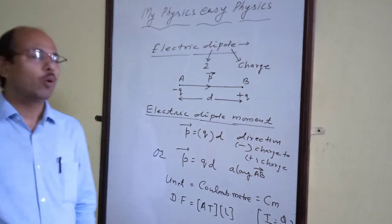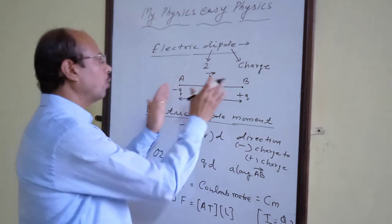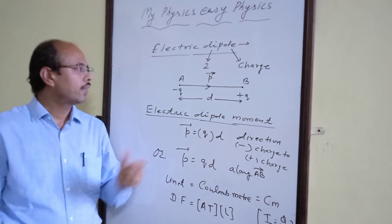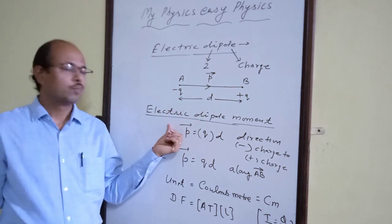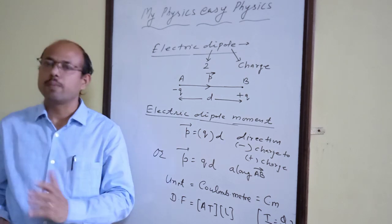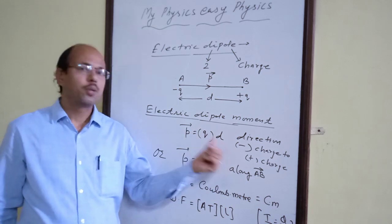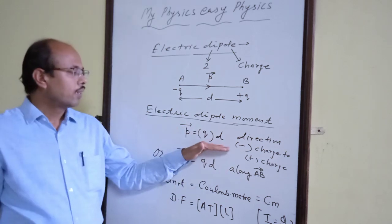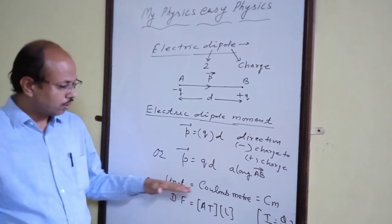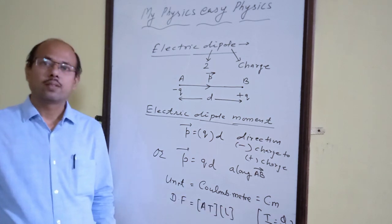So this is what about electric dipole and electric dipole moment. To recap: an electric dipole is a system of two equal and opposite charges placed at a small distance apart. Electric dipole moment is a measurable quantity given by the product of the magnitude of either charge and the distance between them. The formula is P equals Qd, the unit is coulomb meter, and the dimensional formula is A¹T¹L. Thank you.